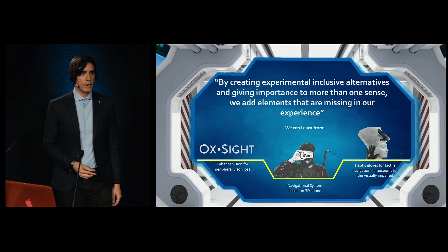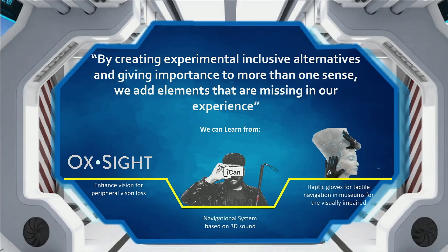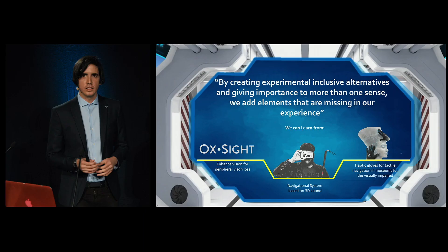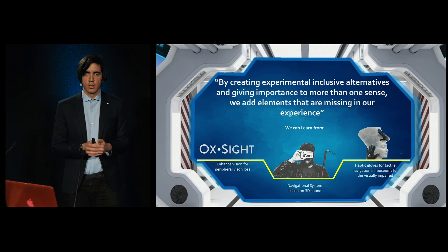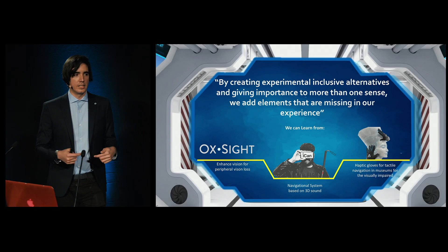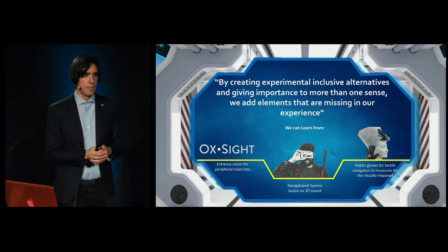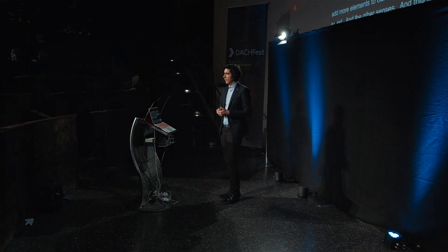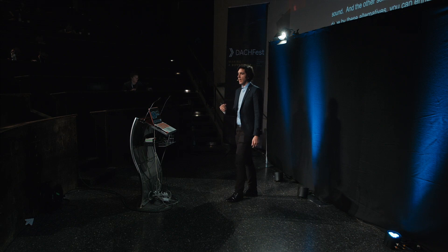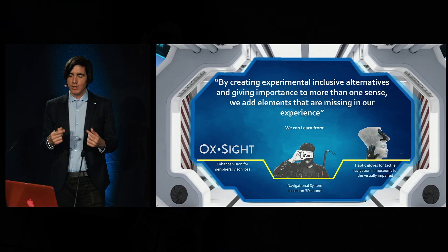In order to create experimental inclusive alternatives and give importance to more than one sense, we need to add more elements to our experience and rely more on the role of sound and other senses such as touch. This has been done by alternatives such as Oxide, which enhances peripheral vision for those who have visual impairment; the ICANN application, which applies the concept of 3D sound for navigational systems; and also haptic globes, which allow those who are visually impaired to touch exhibitions in museums in order to create a visual image of elements that they cannot see.